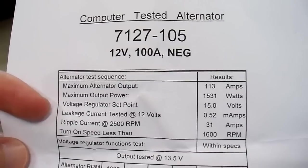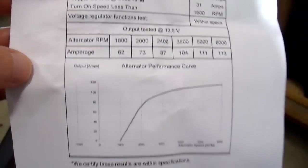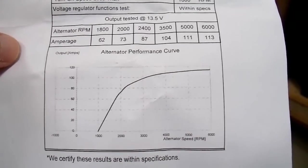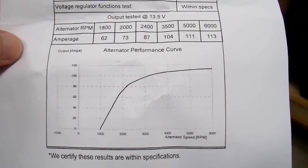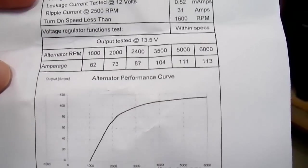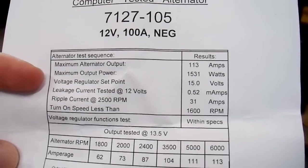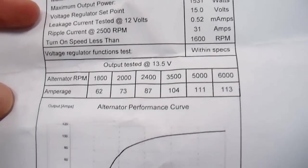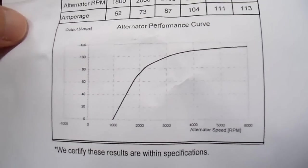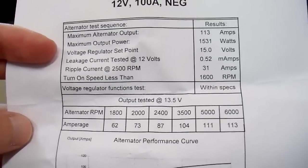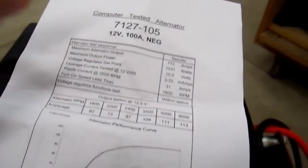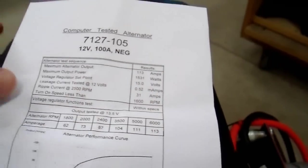Well, one way is you could test every single alternator, print out a sheet for that particular alternator and stuff one in every box. Or you could print out 10,000 identical sheets and just stuff one in every box. There's a good chance that's what happened.